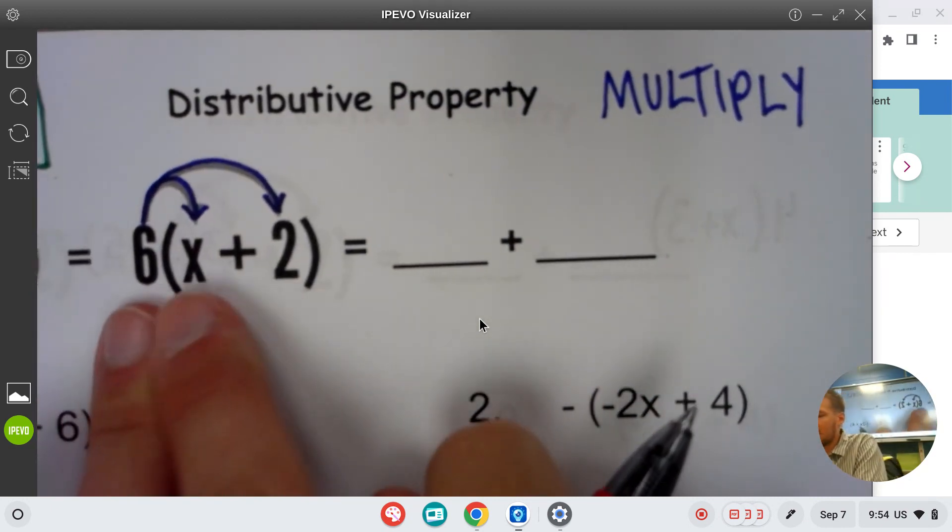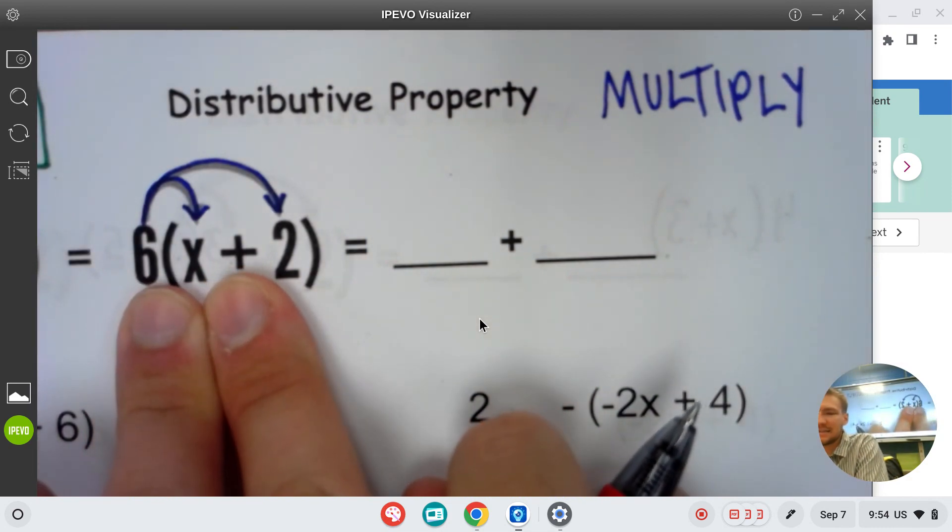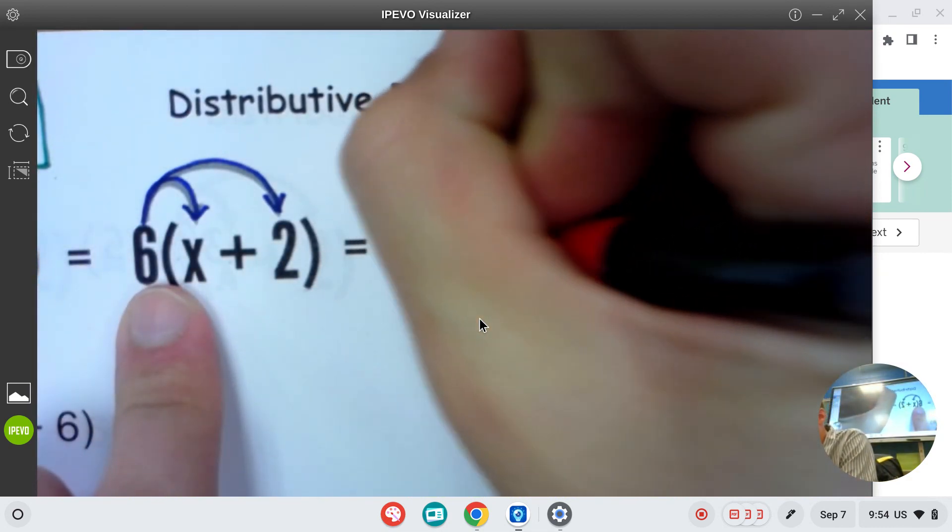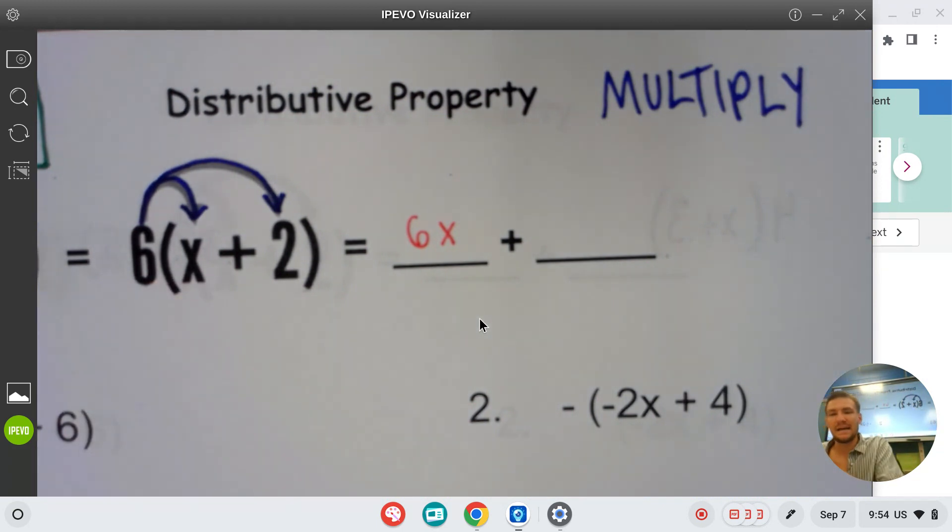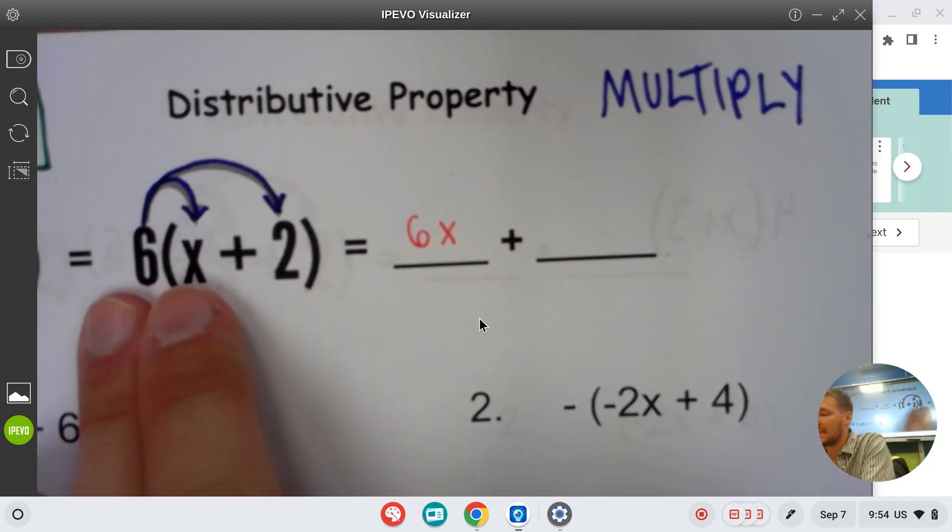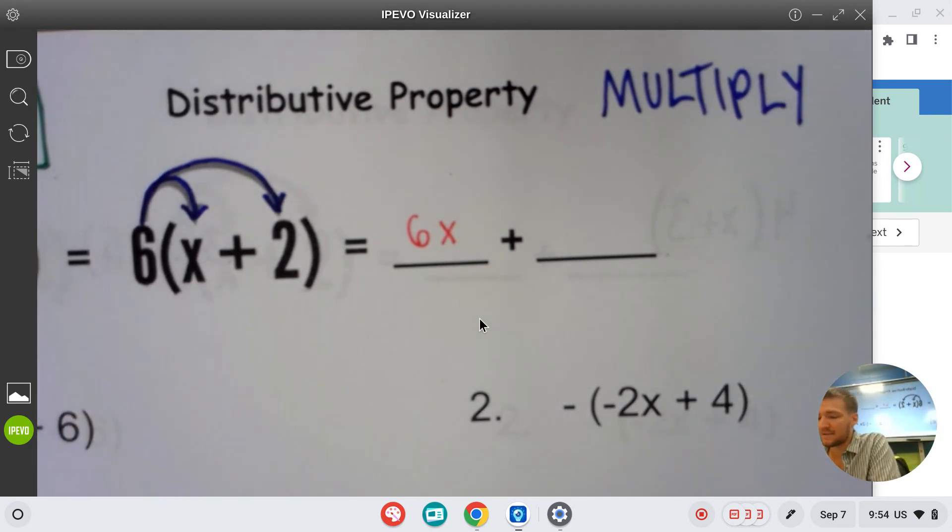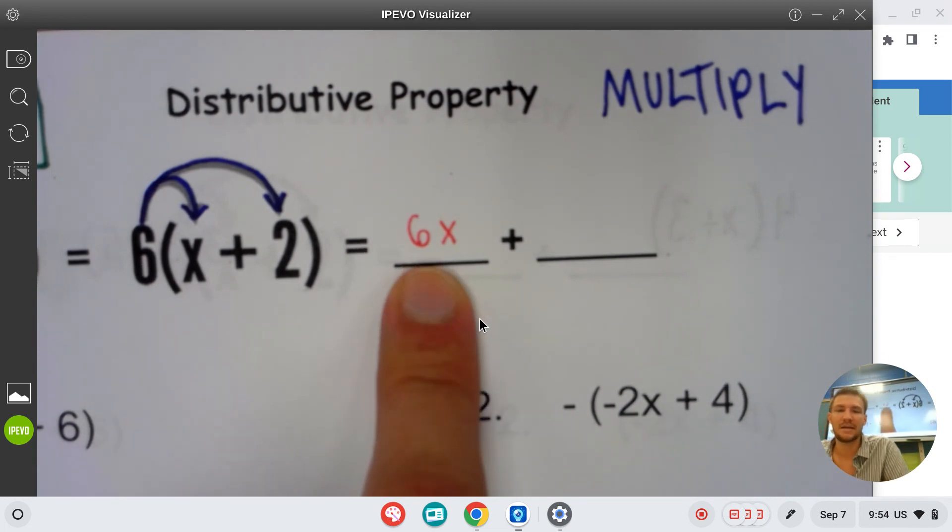For this first one, six times the x is going to be 6x. Nice job. Multiplying a number times a variable is something that students can kind of stress about when they're first back from summer, but it is not really as difficult as it sounds. If you want to multiply a number times a letter, you just put them next to each other and that's it. So six times x is just 6x. You just stack them next to each other, no big deal.